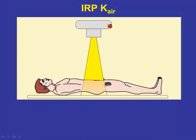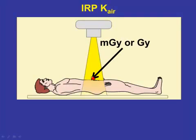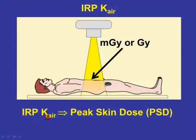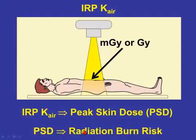In terms of the IRP air kerma, this is the number we are getting. You can think of it as the radiation that is incident on the patient, and if you have this number, you can use it to derive the peak skin dose. The peak skin dose itself is used to estimate the chance of a radiation burn. The IRP air kerma is the number that you see on the monitor — it is close and related to the peak skin dose.